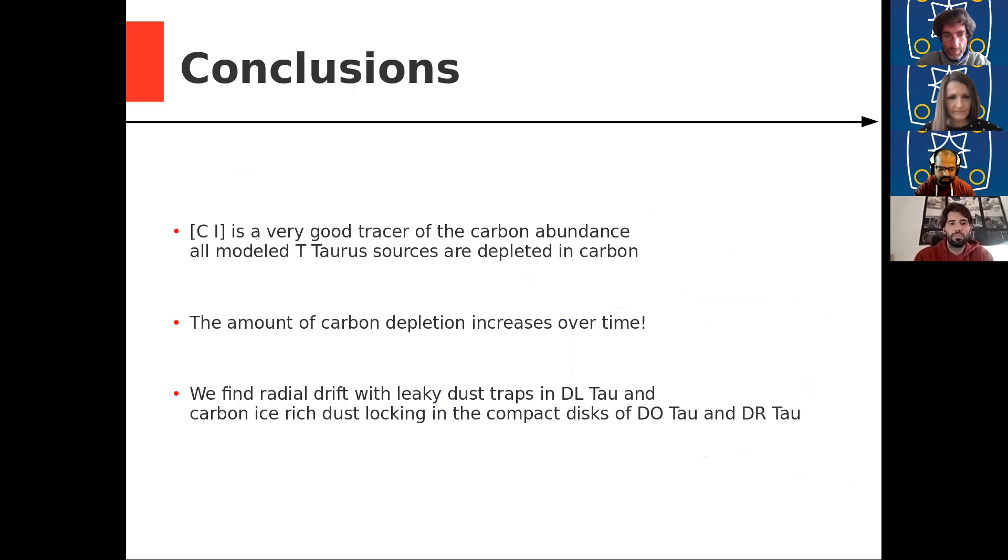So with that, I leave you with the conclusions. So we see that neutral carbon in the outer disk is a very good tracer of the elemental carbon abundance in the bulk of the gas. And we modeled three sources that are all depleted in carbon, and we see that the amount of carbon depletion in the outer disk increases over time, mostly due to temperature effect. And in the end, we find radial drift in DL Tau, which points at leaky dust traps or at late formed dust traps. And we find that there is a lot of carbon rich ice locking in the compact disks of DQ Tau and DR Tau. So thanks for your attention and happy to take any questions.